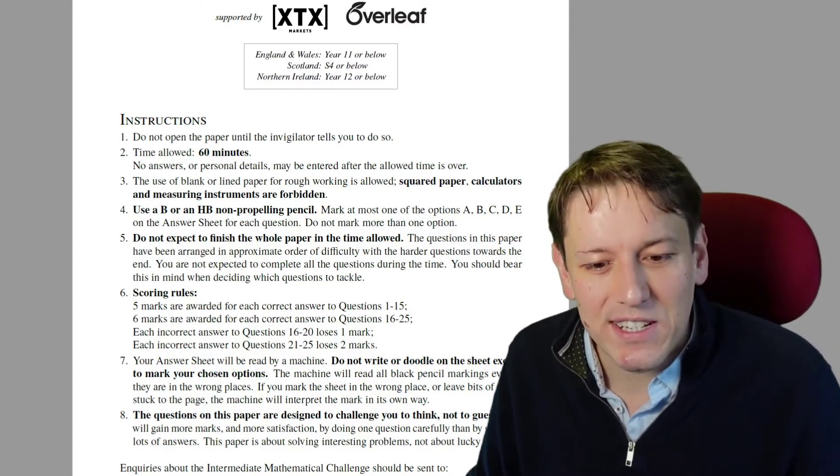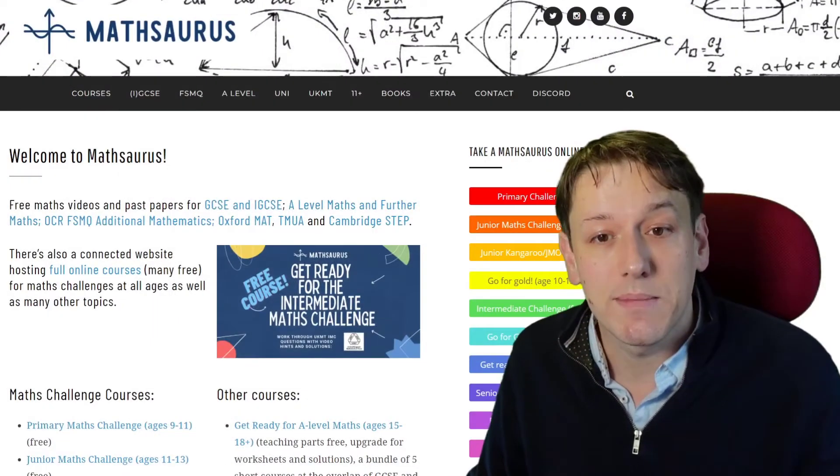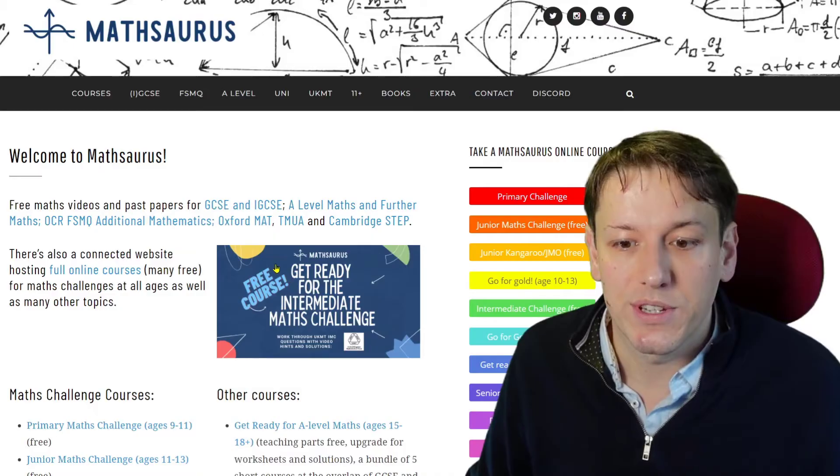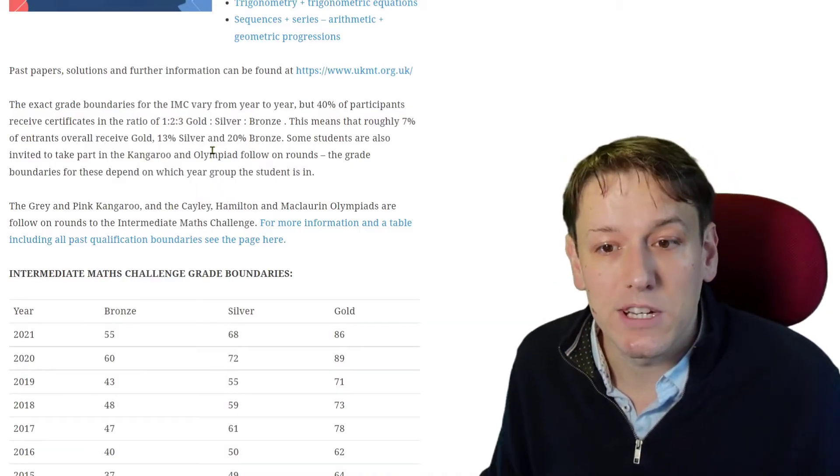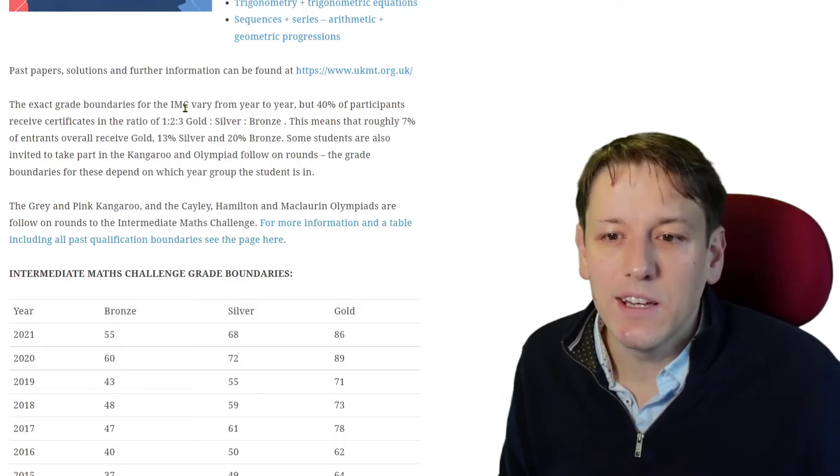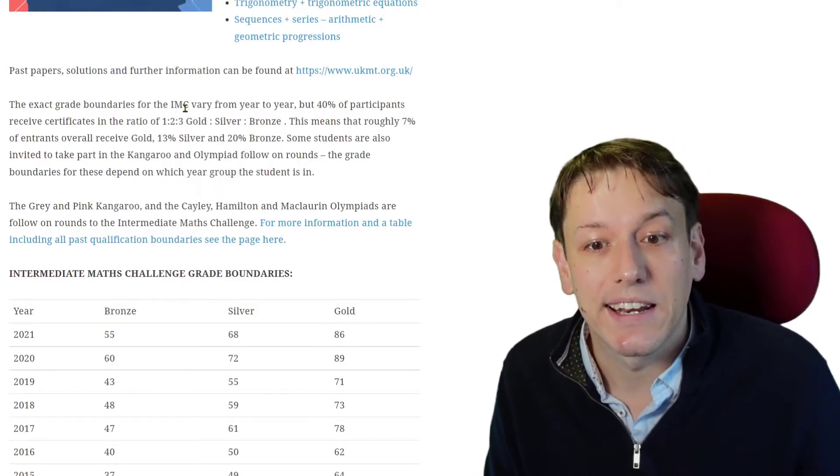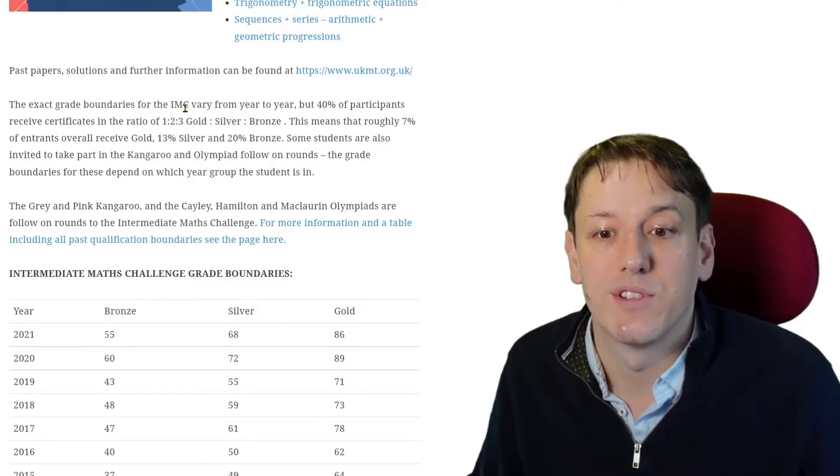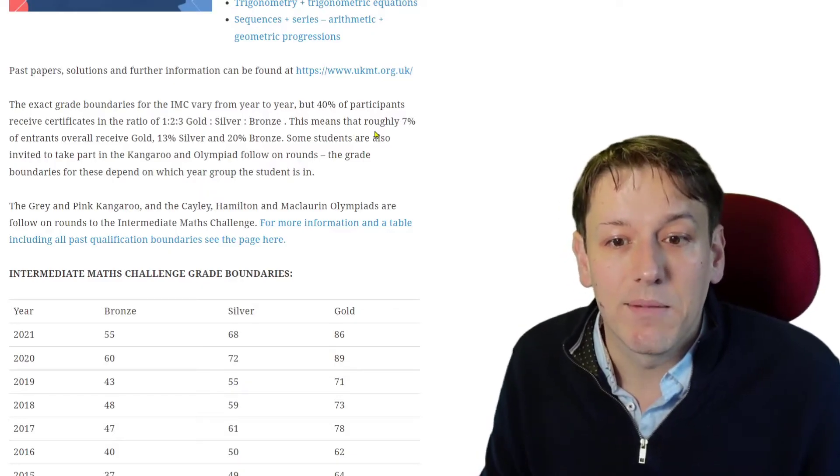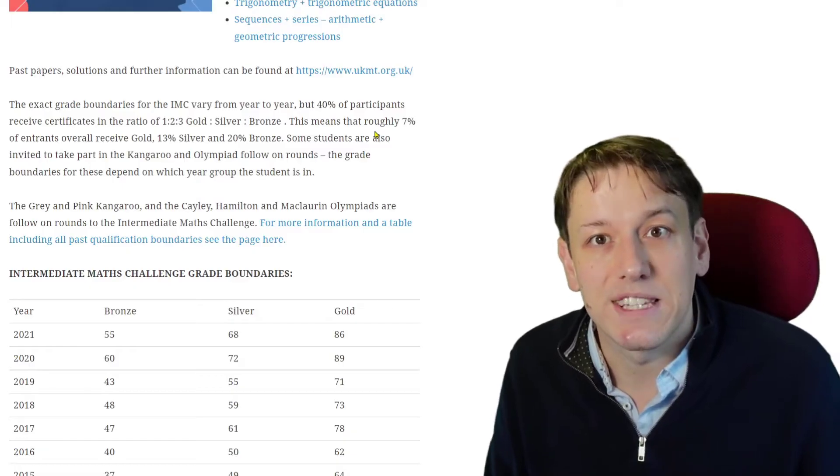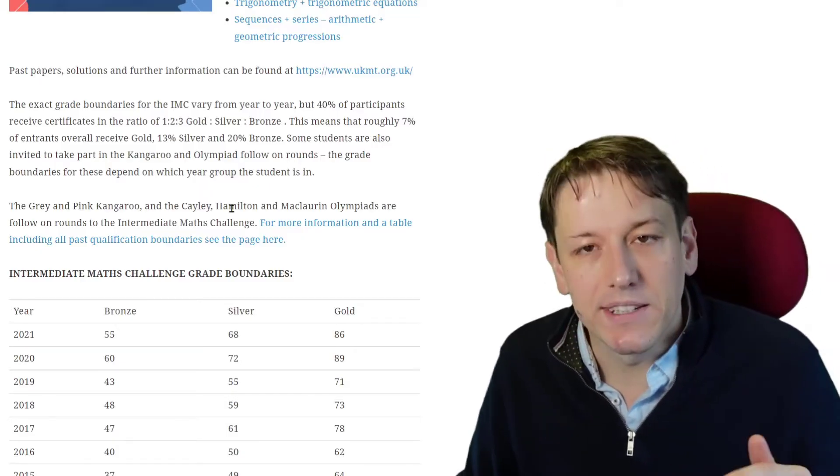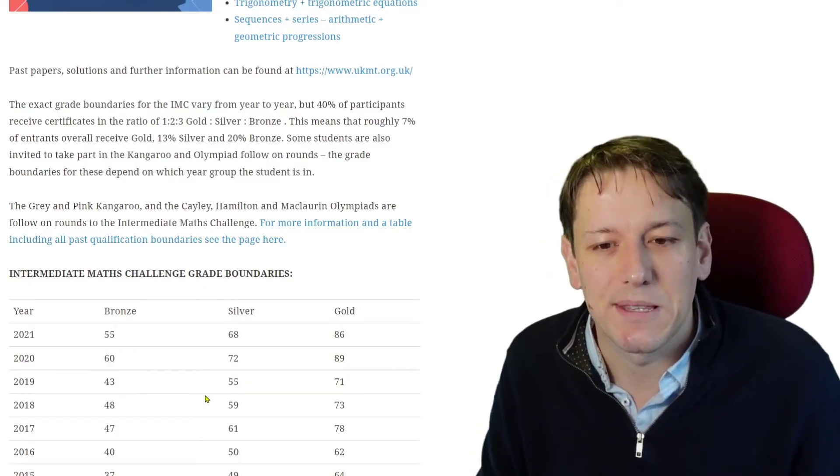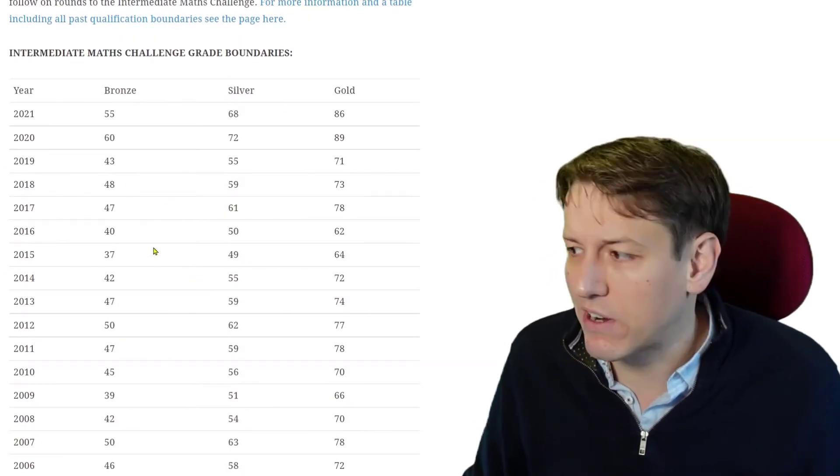How many questions do we actually need to get right to get the different certificate grade boundaries? If you go over to the Mathsaurus website and the Intermediate Maths Challenge section, you can see links to the courses and descriptions of how they award the grade boundaries. The exact grade boundaries vary from year to year, but 40% of people who enter will get a certificate in the ratio of 1 to 2 to 3 for gold to silver to bronze. That means one sixth of the 40%, two sixths of the 40%, three sixths of the 40% get gold, silver, and bronze, which equates to roughly 7%, 13%, and 20% of entrants. The grade boundaries vary slightly from year to year depending on who takes the papers and how hard those papers are. You can see all the grade boundaries from previous years here in this table.